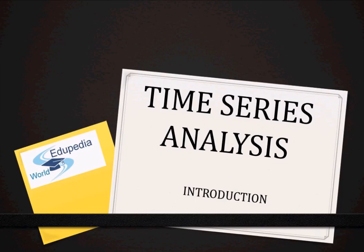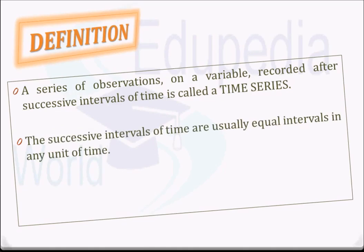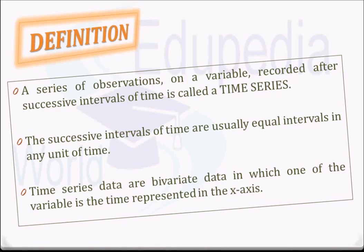A series of observations on a variable recorded after successive intervals of time is called a time series. The successive intervals are usually time intervals of any unit, which could be ten years, a year, a month, a week, a day, an hour, and so on. It should be noted that time series data are bivariate data in which one variable is time, represented on the x-axis and denoted by the letter T, while the other variable, denoted by Y with subscript T, could be anything else.